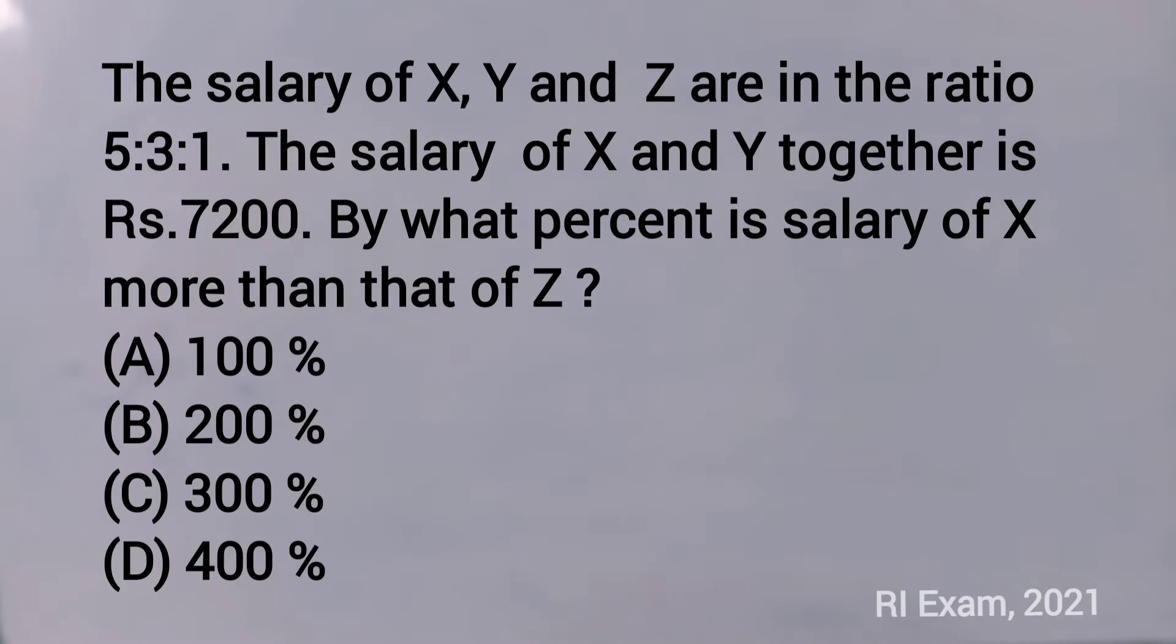The salary of X, Y and Z are in the ratio 5 is to 3 is to 1. The salary of X and Y together is Rs.7200.